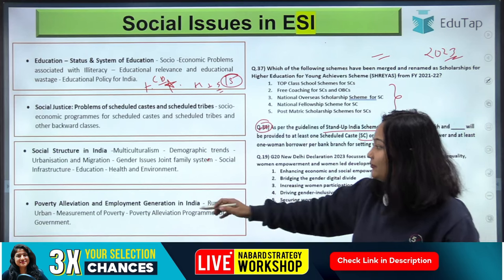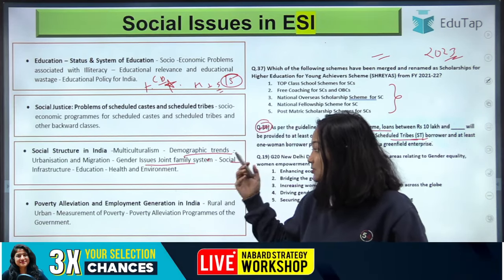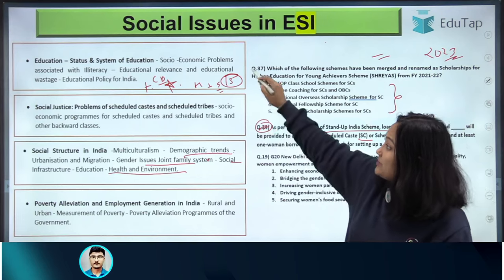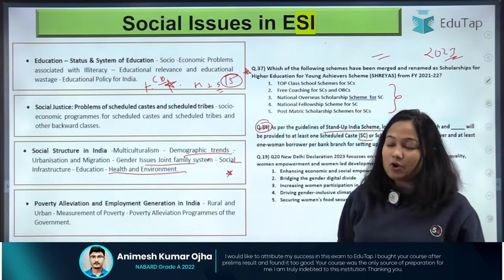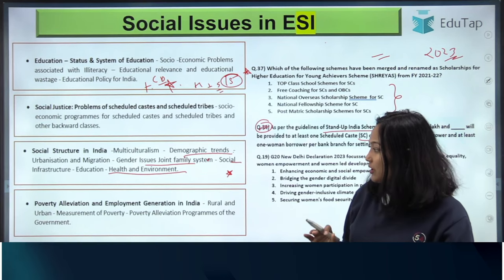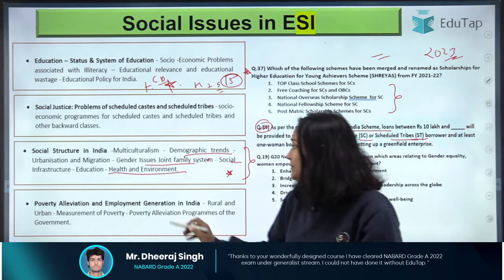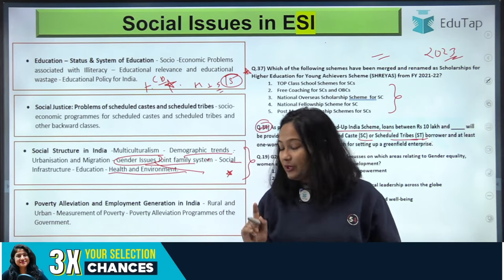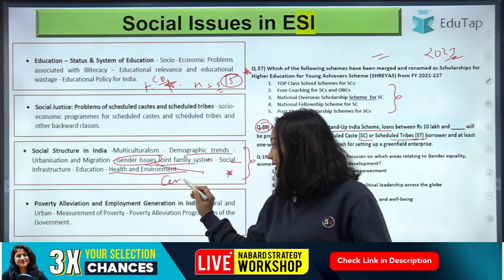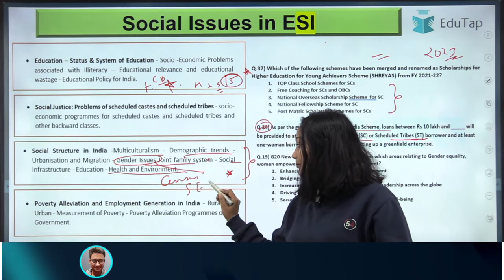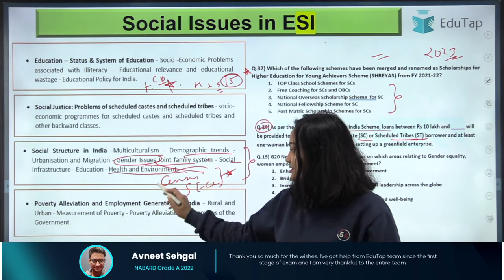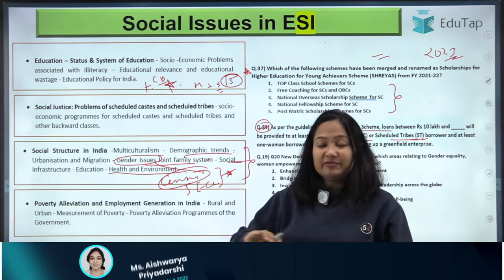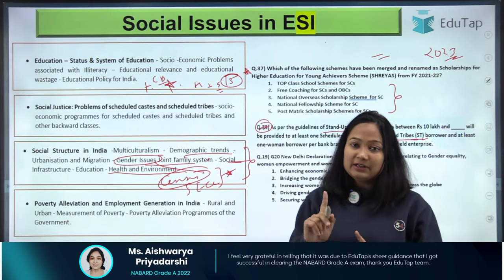Coming to Social Structure of India: here we are talking about demographic trends, gender issues, and social infrastructure — Education, Health, and Environment. Maximum questions that are going to come will be from gender issues. For this, your SECC report and Census 2011 report are very important. Please do note — both these reports you have to cover. The latest version is still the 2011 one. Social infrastructure you need to cover in depth along with current affairs.